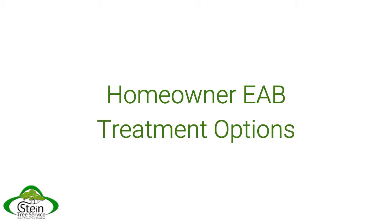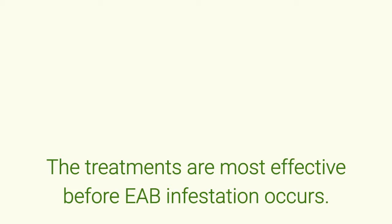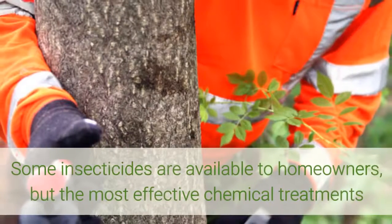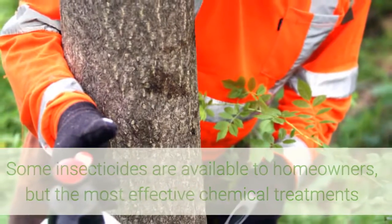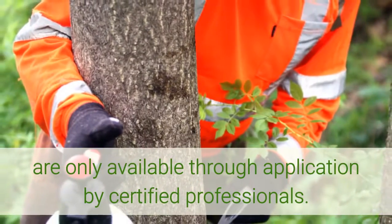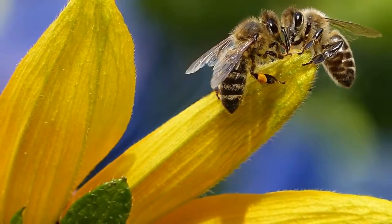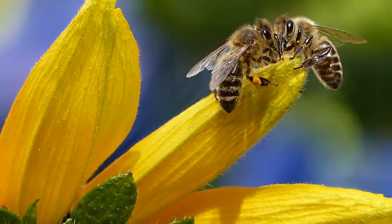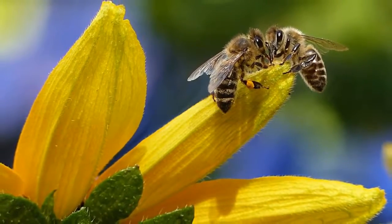Several types of chemical insecticides are available to treat for emerald ash borer. The treatments are most effective before EAB infestation occurs. Some insecticides are available to homeowners, but the most effective chemical treatments are only available through application by certified professionals. Before choosing a method, homeowners should consult with a tree care specialist to determine the impact of insecticides on the surrounding landscape and bees.